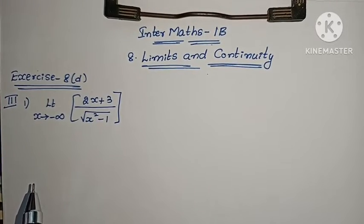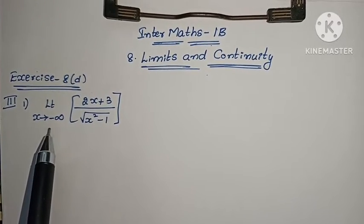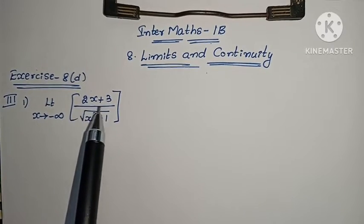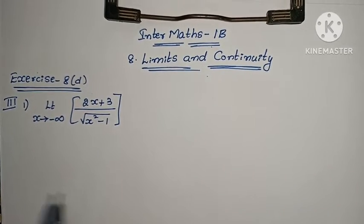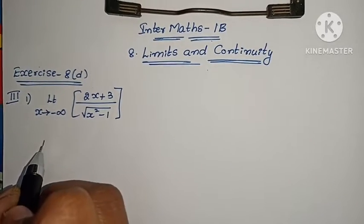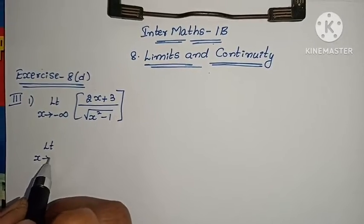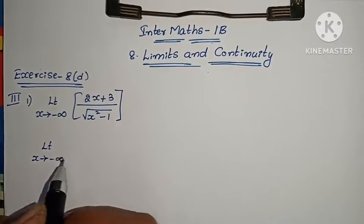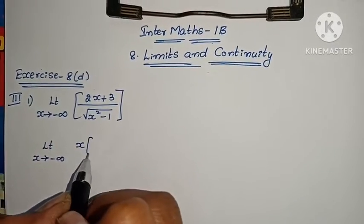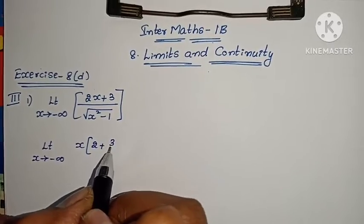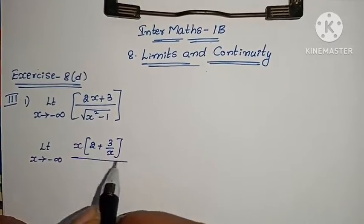Let's look at the first question. Limit x tends to minus infinity of (2x + 3) by (x squared minus 1). To solve this, take x common from the numerator to get (2 + 3/x).